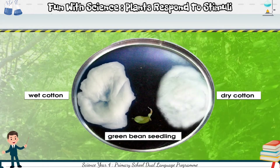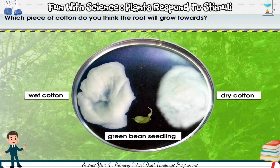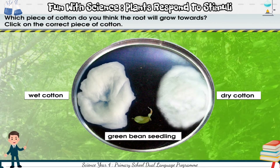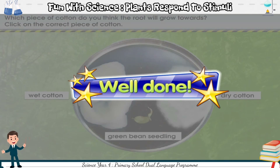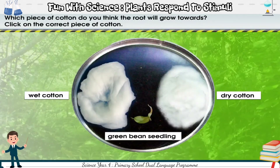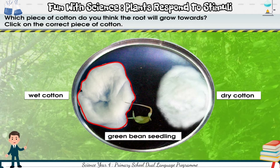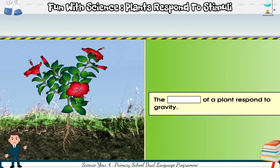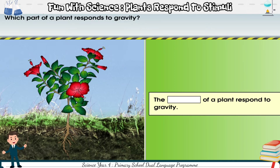Look at this experiment. Which piece of cotton do you think the root will grow towards? Click on the correct piece of cotton. Well done! The root will grow towards the wet cotton — it responds to water.